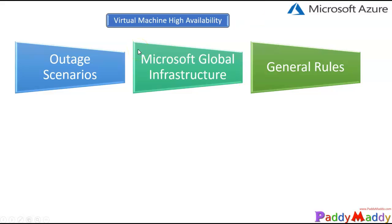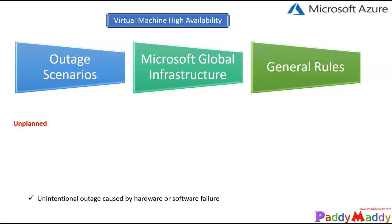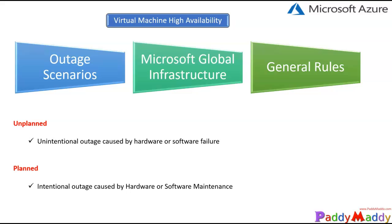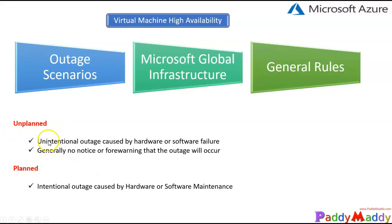Let's have a look at outage scenarios and what type of outages we can expect. The first one is definitely unplanned. When we talk about unplanned, it could be an outage caused by hardware or software failure. For unplanned outages, you will not have any notice or information because it's an accidental or purely unplanned thing.